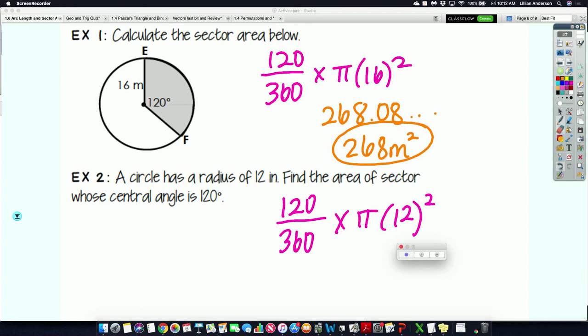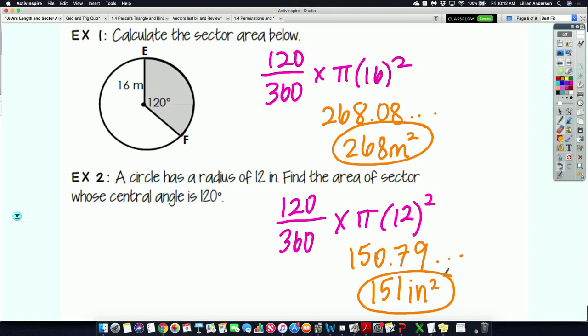Area is always in its square units. Going back to example 1 and actually doing the math out from this particular problem, we will have 268.08, which rounds to be 268 meters squared. Round to 3 significant figures. And then for the last one, we will have 150.79 and some change, to round that to 3 significant figures, which would be 151 inches squared.